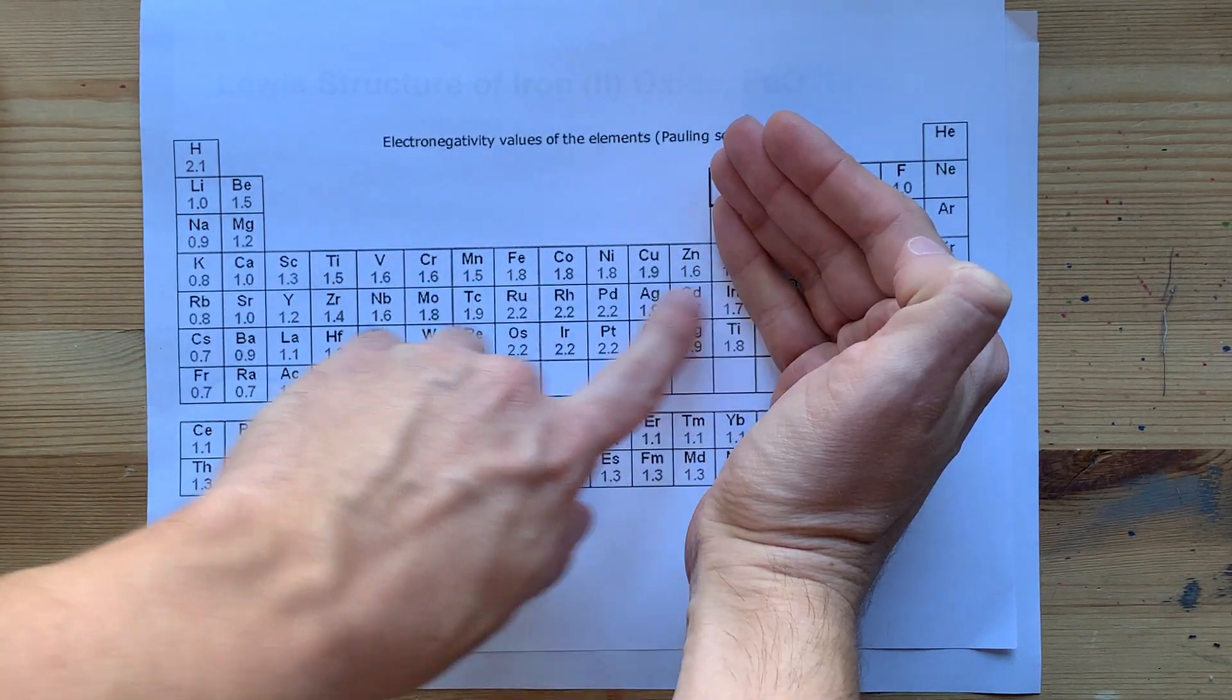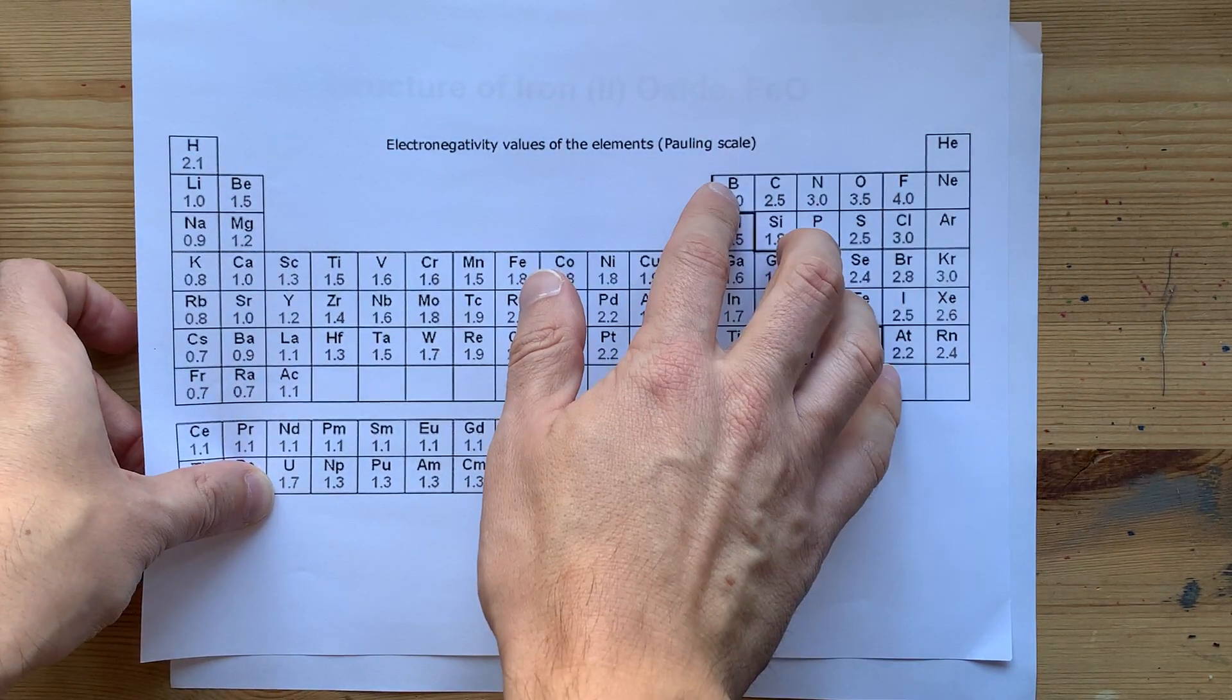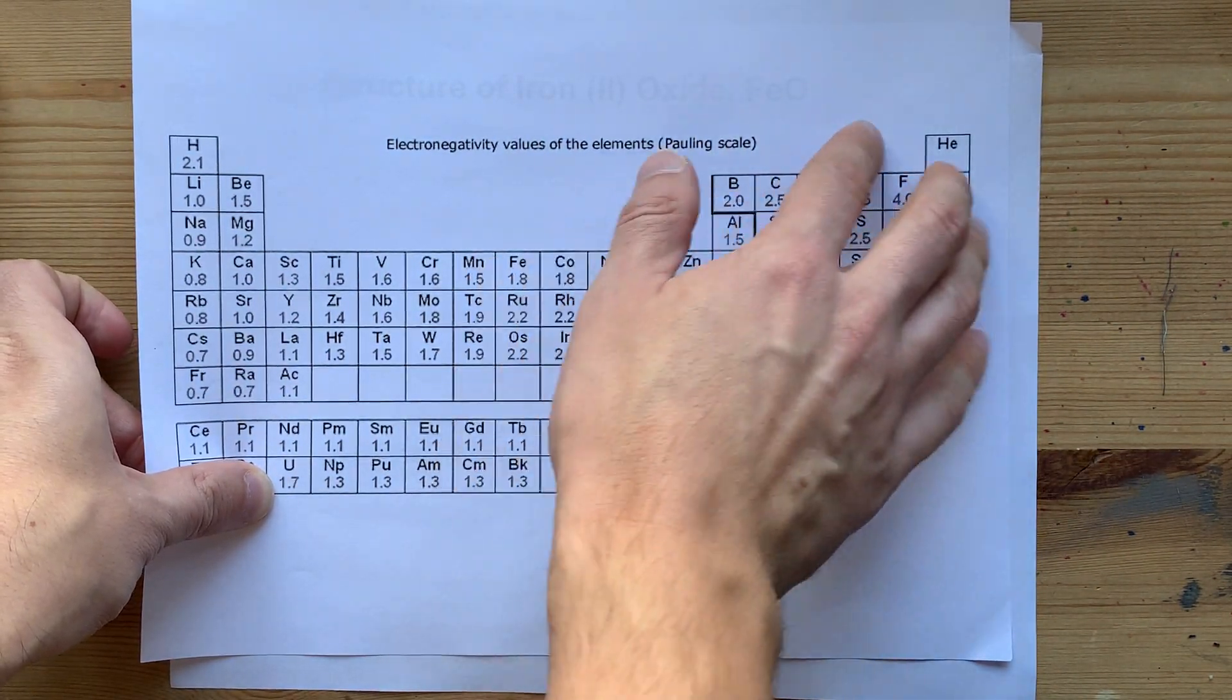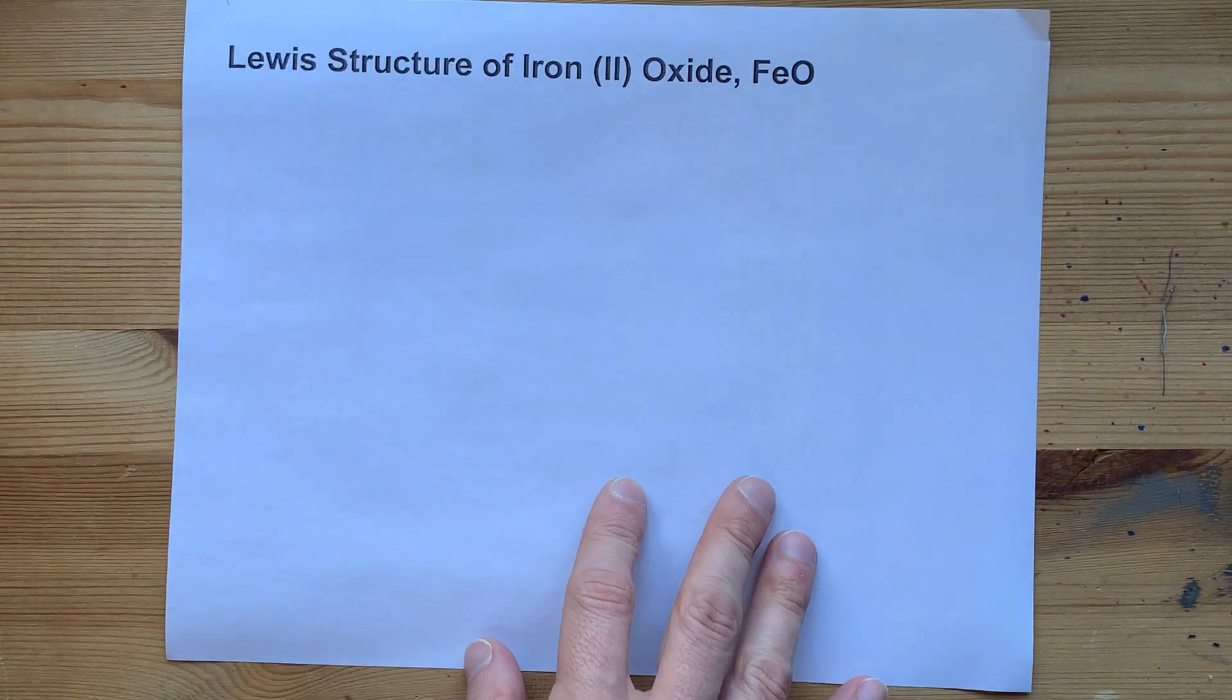From the left-hand side of the periodic table, metals like to lose electrons. Oxygen is a non-metal. From the right-hand side of the staircase, it wants to gain electrons.